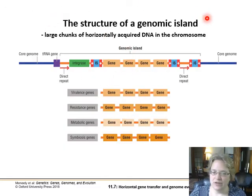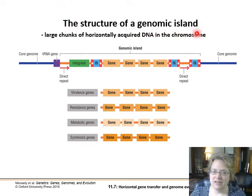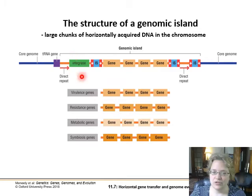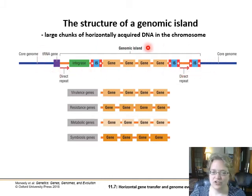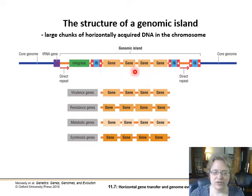If we have a large chunk of horizontally acquired DNA in the genome all together, we call that a genomic island. We definitely see this in transposable elements, where you have insertion sequences, some genes in the middle, and an integrase — this could be in our genome or a bacterial genome, but it's its own little block of genetic content that moves together, transfers horizontally and vertically together.